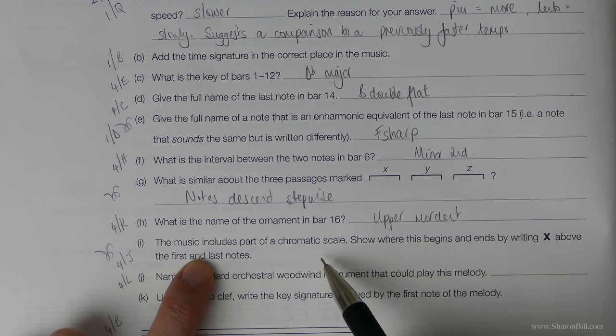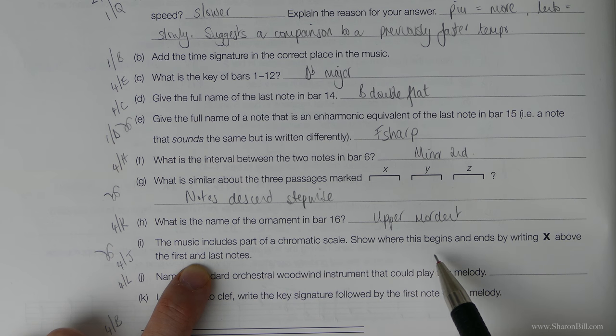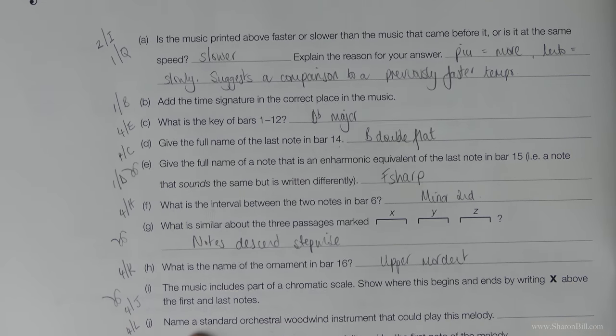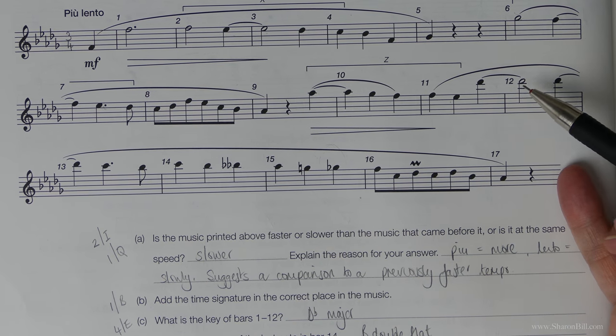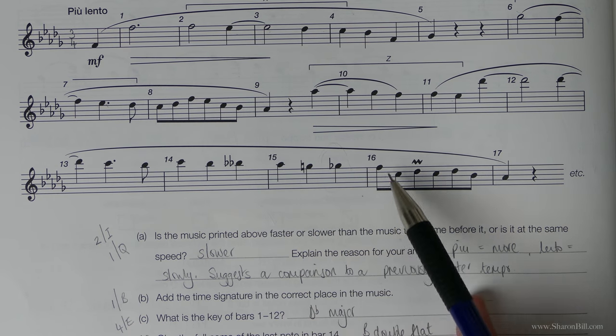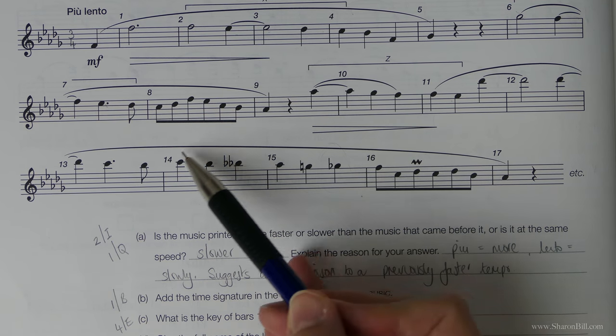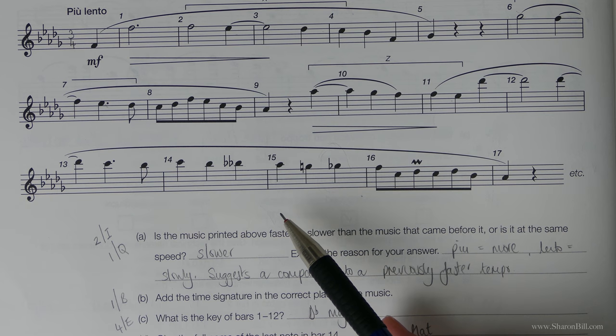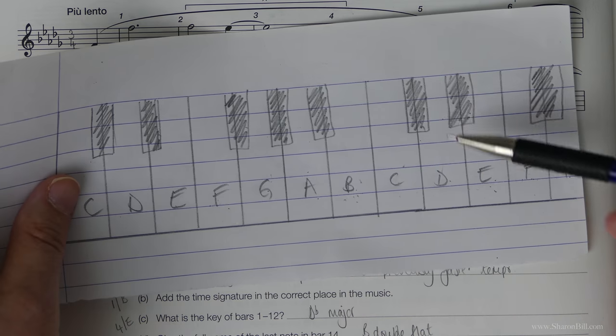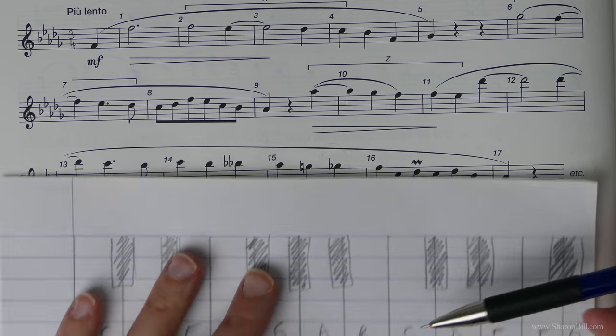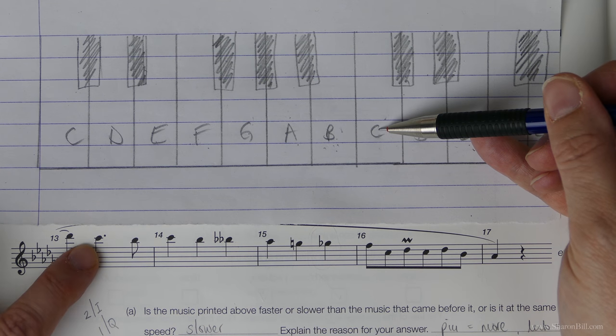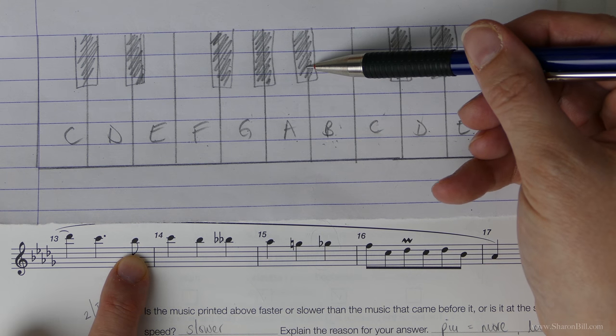Next one. We're getting there now. The music includes part of the chromatic scale. Show where this begins and ends by writing an X above the first and the last notes of the sequence here. So my guess would be, once we get past bar 12, when it moves out of the playing key signature, and we start getting some accidentals, you can see it's all going to start going on here. We've got some accidentals showing us that it's changing. It's just a matter of figuring out where that starts. So D flat to C would be chromatic, but C to B flat, because of your key signature, is not. So it hasn't started yet. C to B flat, again, is not. So it's not started here.